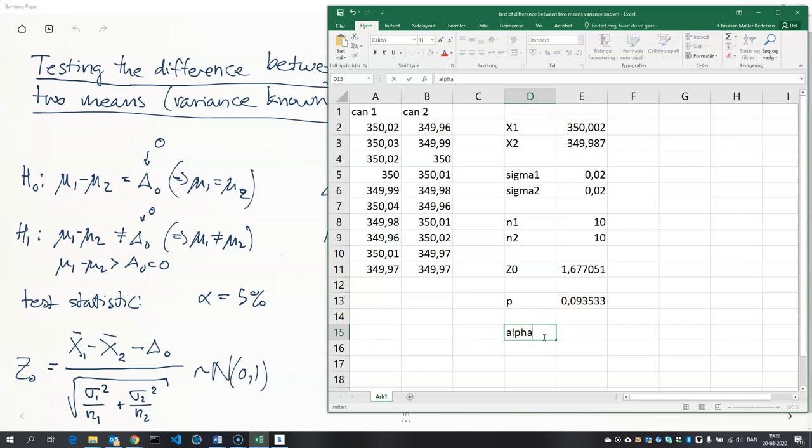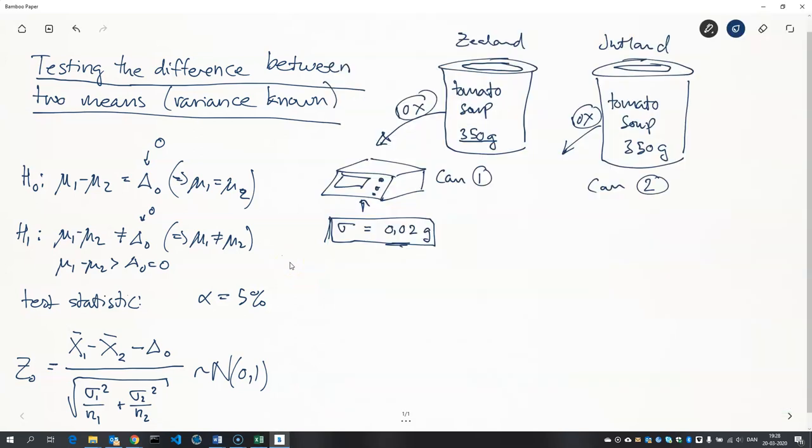So if we have a significance level at five percent, that means that we cannot reject the null hypothesis. In other words, we don't have statistical evidence to say that these two cans of tomato soup have different weights.